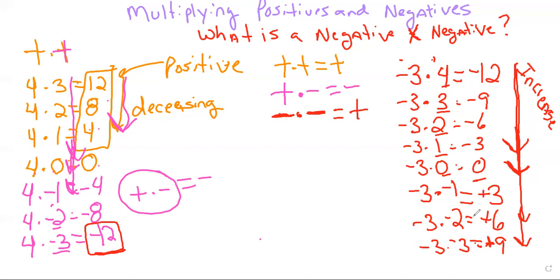Those are your three main things to pay attention to when multiplying positives and negatives: positive times a positive is positive, positive times a negative is a negative, and negative times a negative is a positive. I hope those patterns helped you understand exactly how to multiply when there are all sorts of different signs.